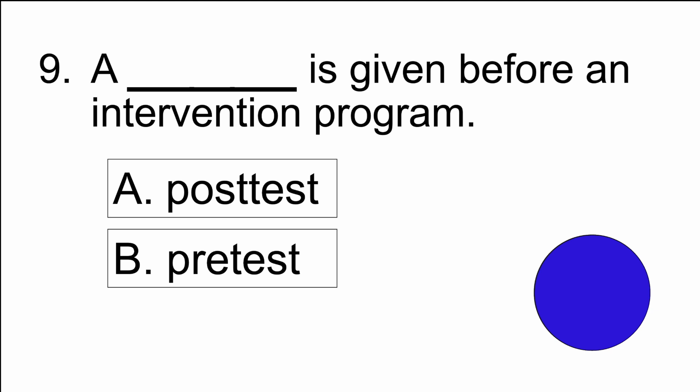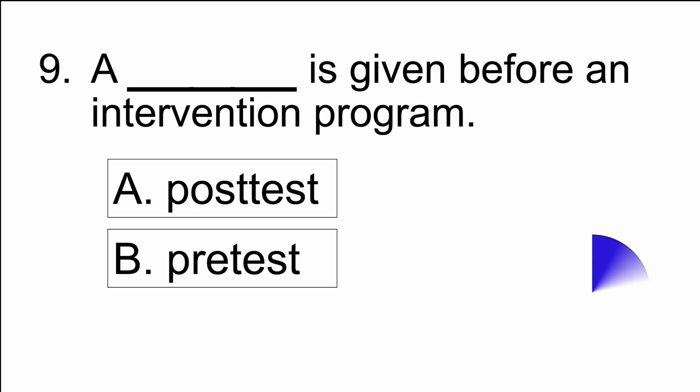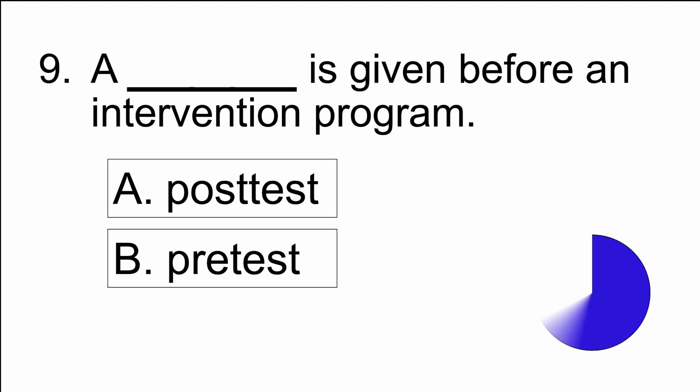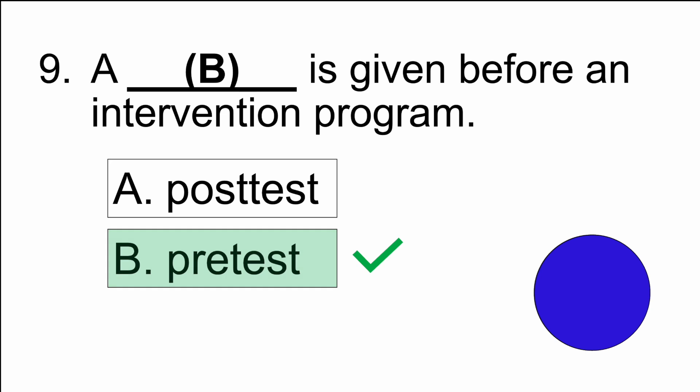Number nine: a blank is given before an intervention program — A) post-test, or B) pre-test. The answer is B) pre-test.